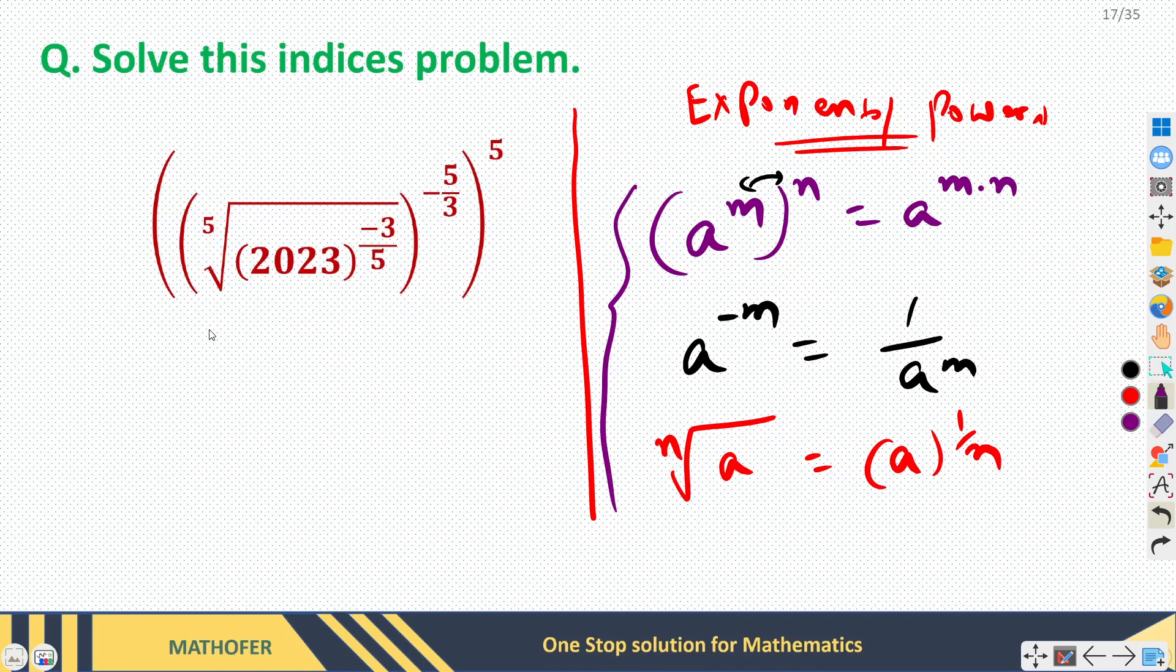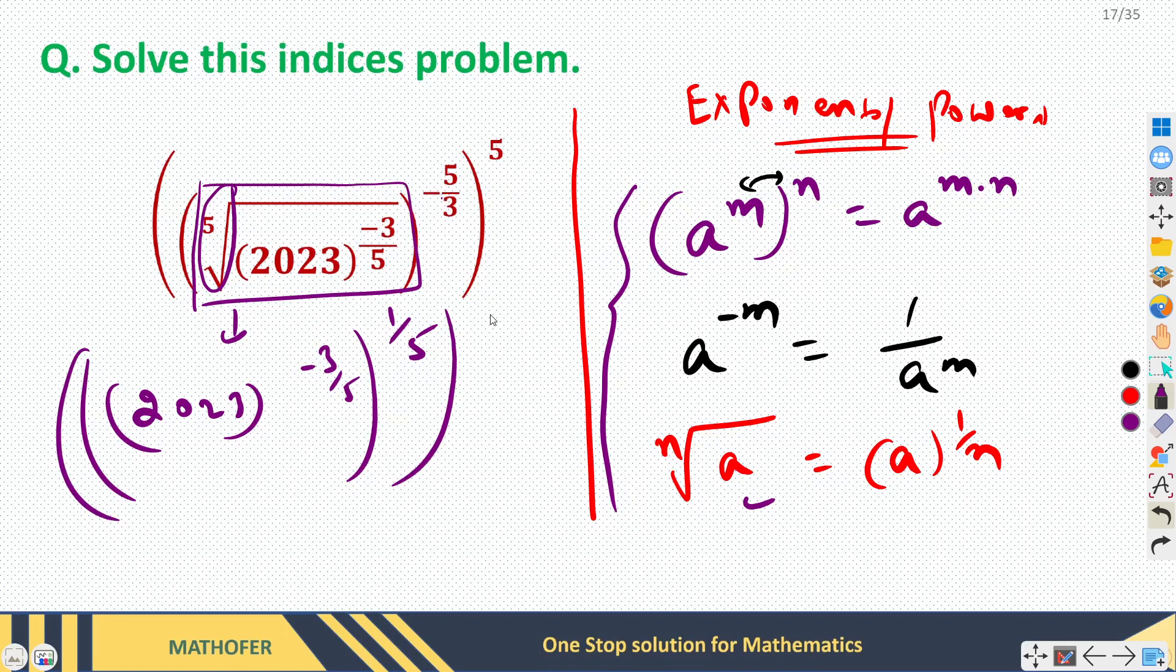So here this radical sign can be replaced as 2023 raised power minus 3 by 5 raised power 1 by 5, right, using this property. So this is this much expression now raised power minus 5 by 3 and whole raised power 5. So we have to simplify this one.